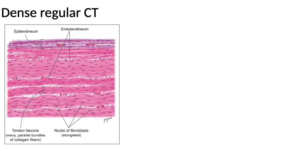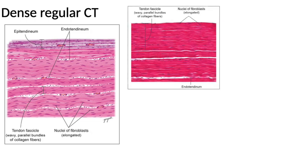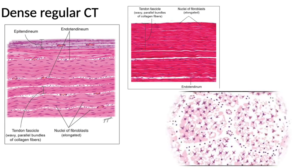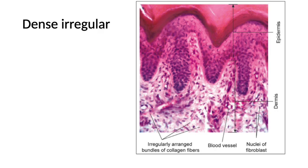Dense regular connective tissue has collagen fibers that are dense and regularly arranged — predominantly type 1 collagen fiber — with very few cells. The fibers are arranged in thick bundles. The example is tendon. In a transverse section of tendon, it gives a typical flying bird appearance because the fibroblast nuclei are pressed between the fibers.